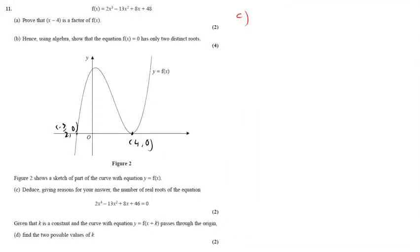OK, so then for part C of this question, deduce giving reasons for answers the number of real roots of the equation. So what we just need to do is we need to think about how this and this relate. And all that's happened is this was plus 48, and this is now plus 46. That's the only change.